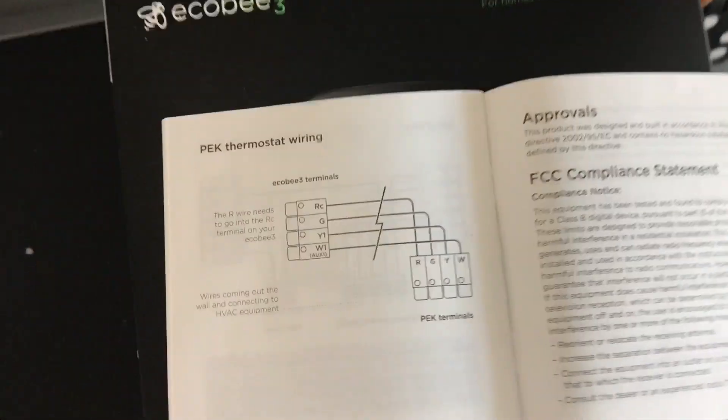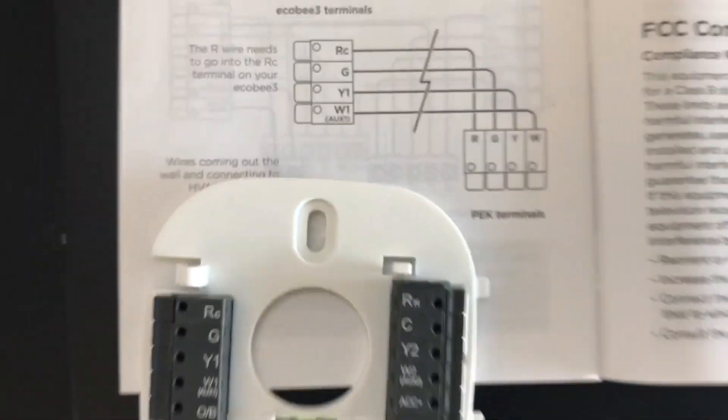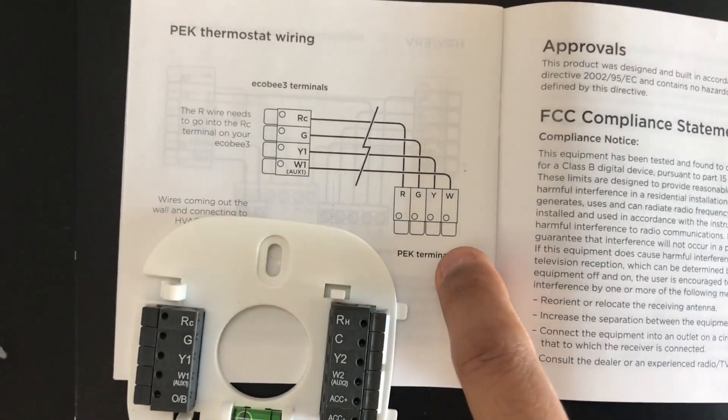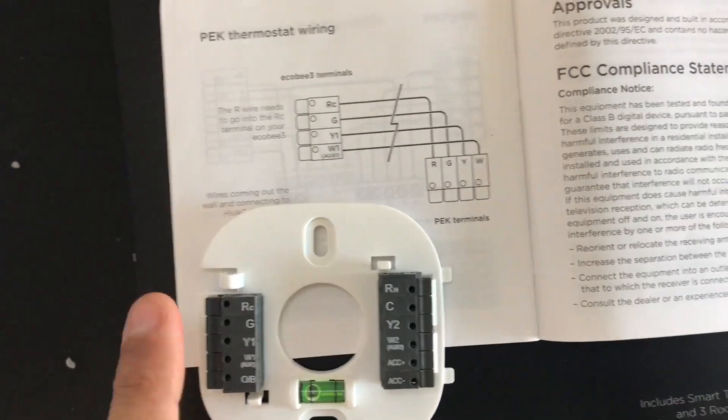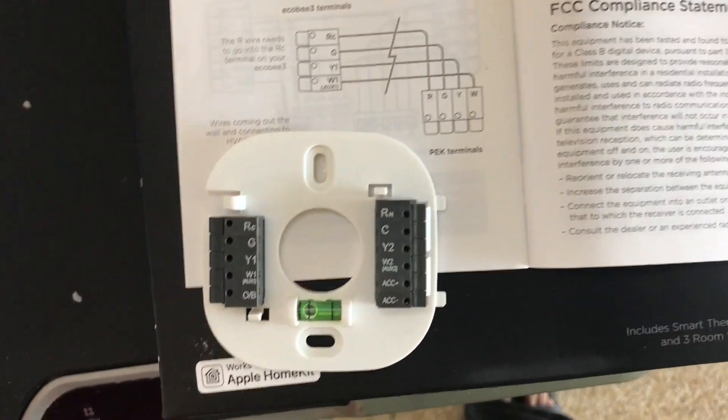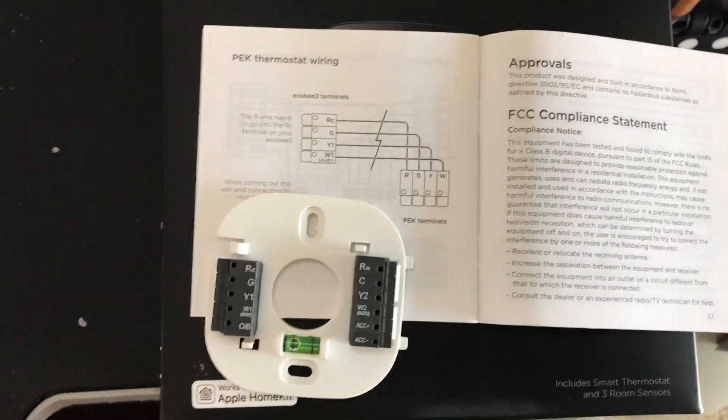In here they show you basically coming from the PEK terminal. Coming from the PEK terminal, you are connecting every wire coming from the PEK into this side of the plate that goes into the thermostat here. That's pretty much it. So I'm going to pause the video real quick and I'm going to wire this up.